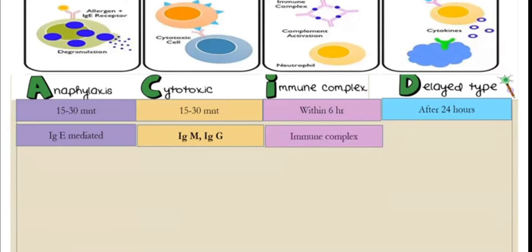In Type 3 hypersensitivity, an immune complex — an antigen-antibody complex — is formed and drives the reaction. In the delayed type, T cells mediate the reaction. The first three types are mediated by B cells, while the delayed Type 4 is mediated by T cells.